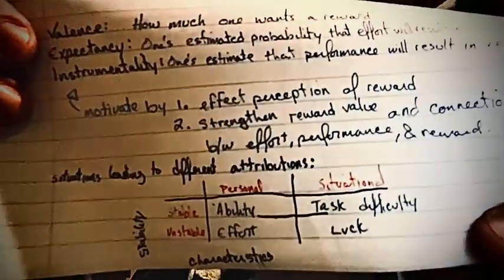Situations lead to different attributions. On one axis we have personal versus situational; on another we have stable versus unstable. Stable and personal equals ability; stable and situational equals task difficulty; unstable and personal equals effort; unstable and situational equals luck.